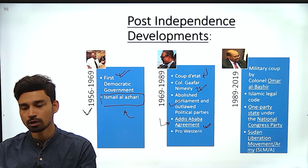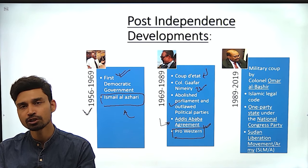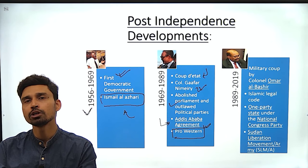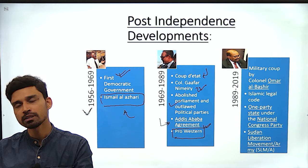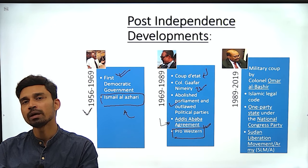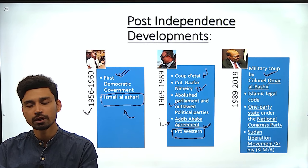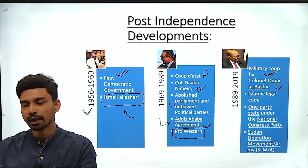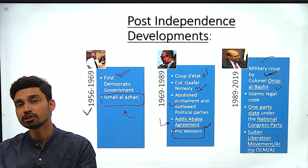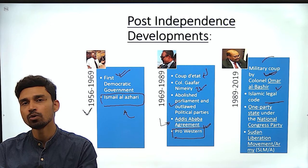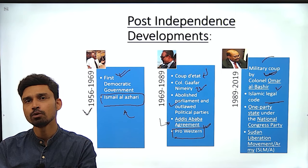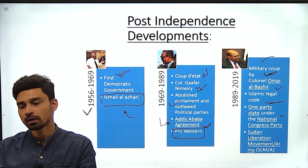The government under Colonel Gaafar Nimeiry was pro-Western, seeking to increase economic cooperation with the West. He tried to initiate IMF-supported reforms, but these were not very popular — causing large-scale inflation and shortages of essential food products. People became angry, and taking advantage of the unrest, another military coup by Colonel Omar al-Bashir was launched. Al-Bashir was a traditional Islamist who initiated Islamic legal code over Sudan. During his reign, there was large-scale oppression of Sudanese people of non-Arab origin.